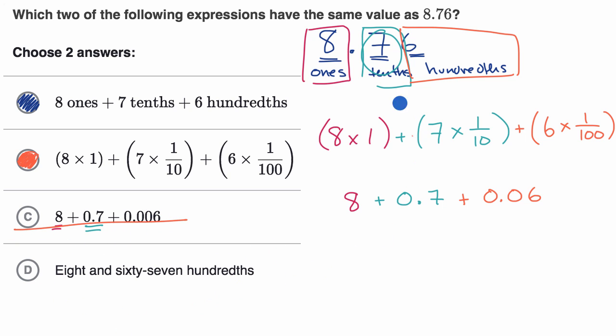And then if we were to write it out in words, we would say this is eight, and. Now, you might say and seven tenths and six hundredths, or you could often, what's normally done is you express it in the lowest place that you have, or the most precise place that you have.